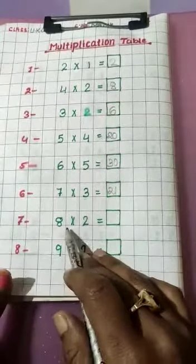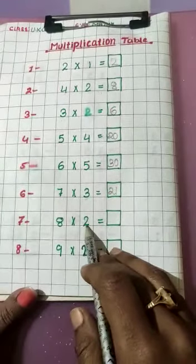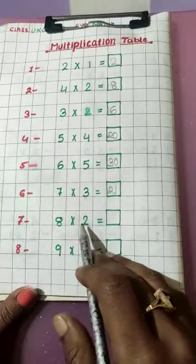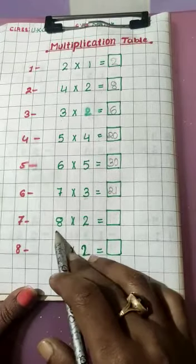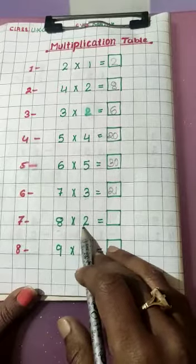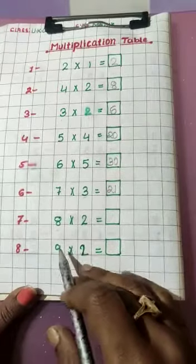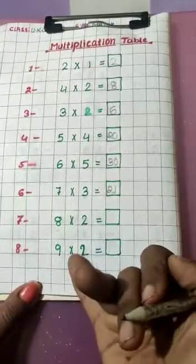Now, next one. Eight into two. To ye saai bada number hai, saai chota. To haam ko eight ka table to aata nai hai, two ka aata hai. To haam two ka table eight times pardhayenge.